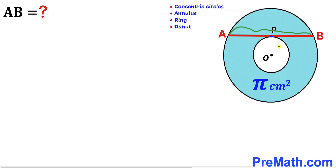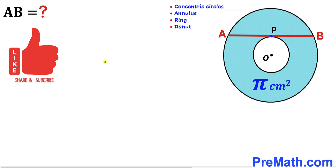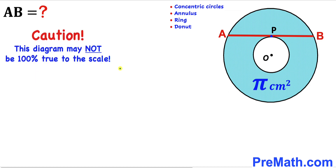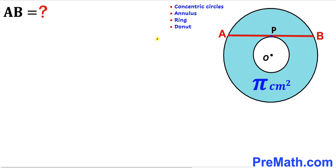Moreover, this chord AB is tangent to the small circle at point P, and our task is to calculate the length AB. Please don't forget to give a thumbs up and subscribe. Keep in mind that this figure may not be 100% true to scale.